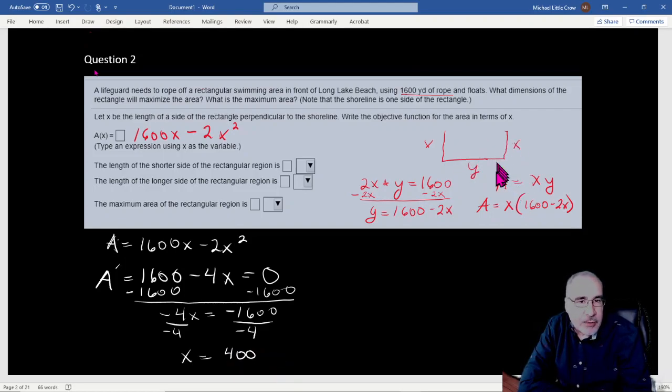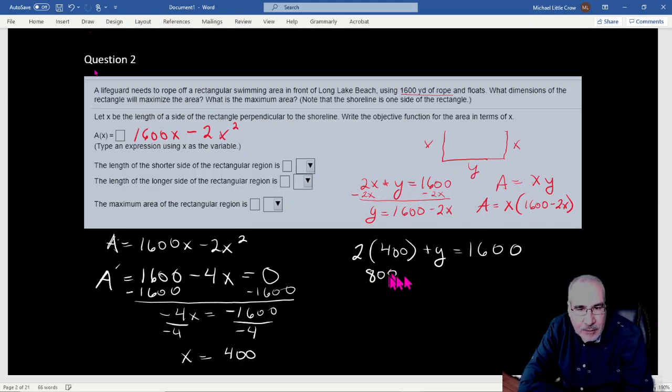I'm imagining it'll be the shorter side. But we could figure that out here, right? We take our constraining function, 2x plus y equals 1600, and plug in our value for x. So we know x is 400. You can see that's going to be 800. So y is 800. But let's do the work. So 800 plus y equals 1600. Subtract the 800. So y is 800, x is 400.